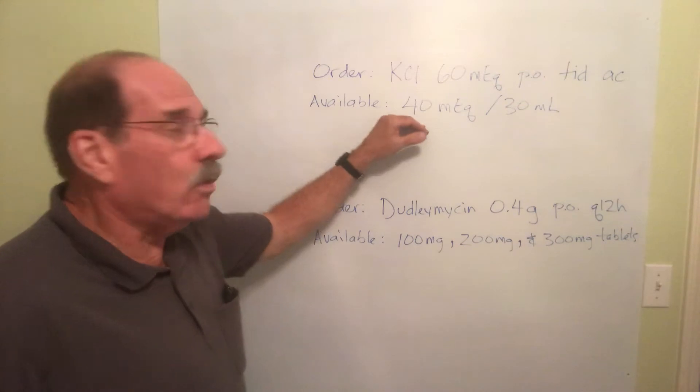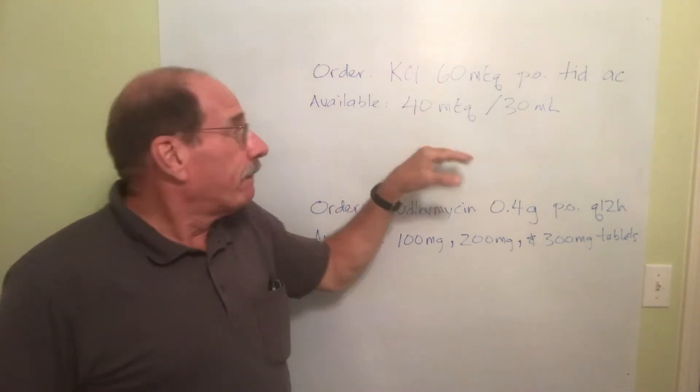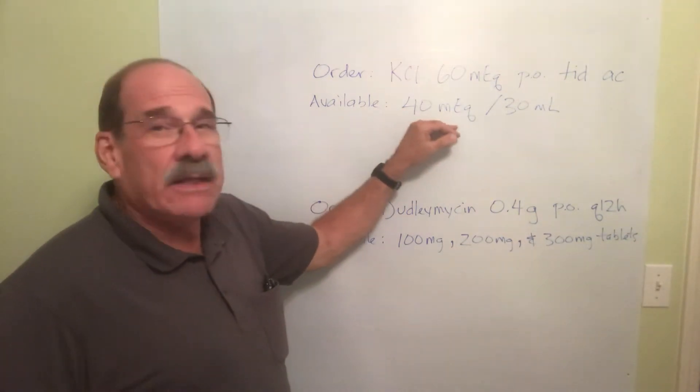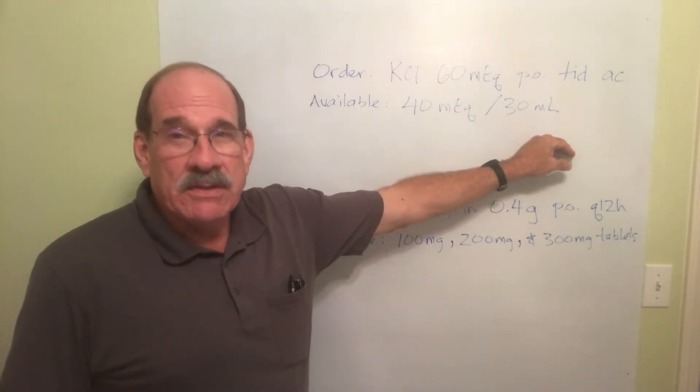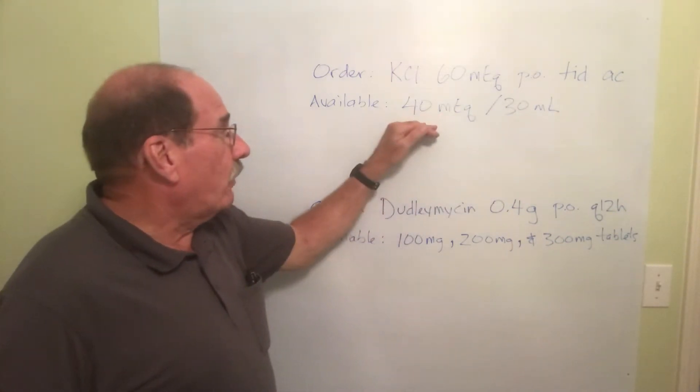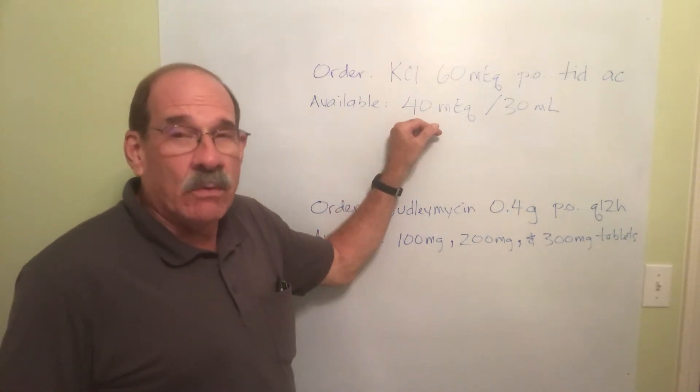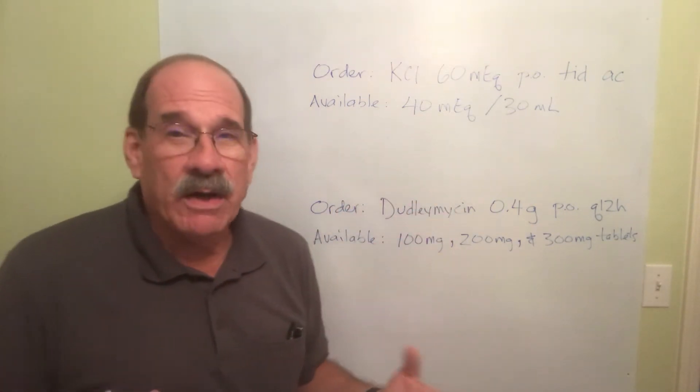That means each 30 milliliters has 40 milliequivalents in it. Well, just again, doesn't matter what a milliequivalent is. Just set it up like you've been taught and let it work itself out. The order is 60 milliequivalents.